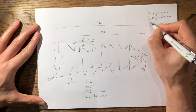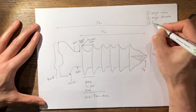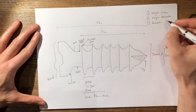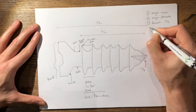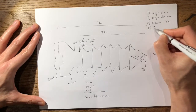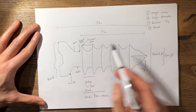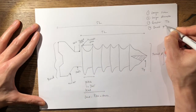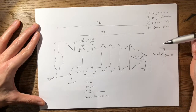Thirdly, the greater the thread depth — the greater the thread depth, the more purchase you have in the bone, increasing the pullout strength. And fourthly, the smaller the pitch — a smaller pitch means more threads purchasing the bone. So all four of these attributes increase the pullout strength.